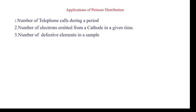Coming to Poisson applications, this formula is used to find the number of telephone calls during a period, how many electrons are emitted from the cathode — for example, in a CRO how many electrons can be generated from the cathode — and the number of defective elements in a sample or in a company. In that case, we use Poisson distribution to calculate the probability.